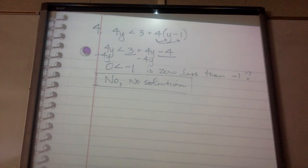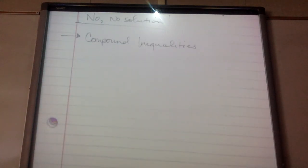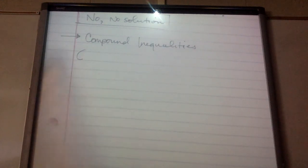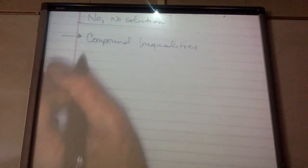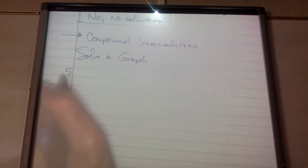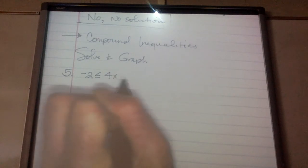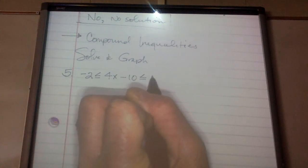I'm now going to do two more that have to do with compound inequalities, meaning there is more than one solution. These are more complex — compound inequalities — and all that means is I'm going to have more than one set of answers. We're still going to solve and graph. Here's number 5: negative 2 is less than or equal to 4x minus 10, which is less than or equal to 6.